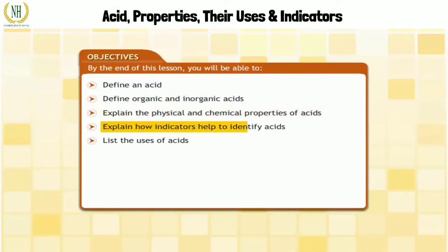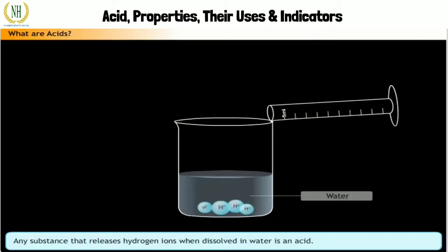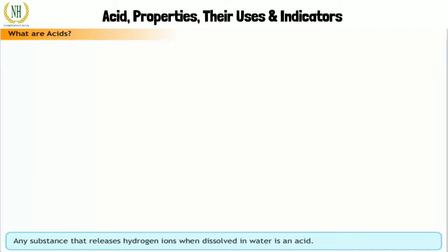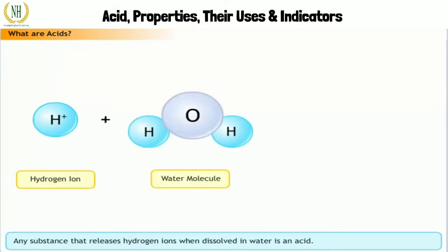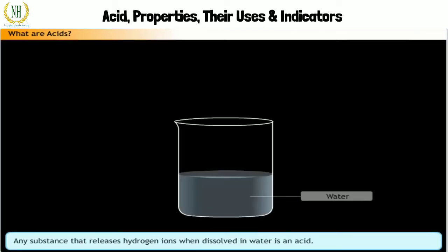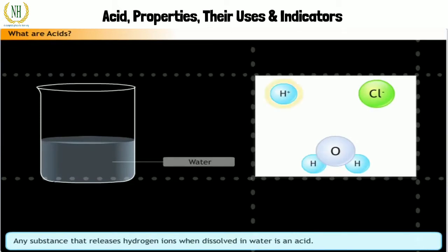Any substance that releases hydrogen ions when dissolved in water is an acid. A hydrogen ion cannot exist on its own, so it combines with a water molecule to form a hydronium ion. For example, hydrochloric acid when dissolved in water liberates a hydrogen ion and a chloride ion. The hydrogen ion combines with water to form a hydronium ion.